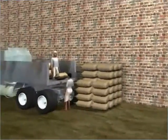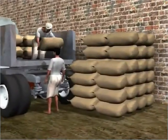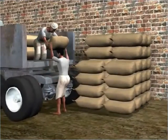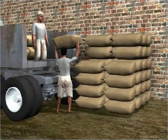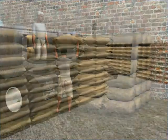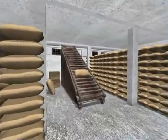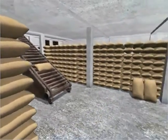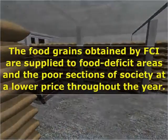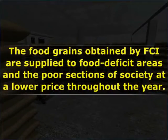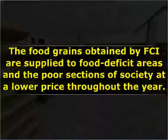The FCI obtains surplus grains from farmers through its state agencies and stores it in granaries. The grain can be supplied to food deficit areas and to the poor sections of society at a lower price throughout the year.